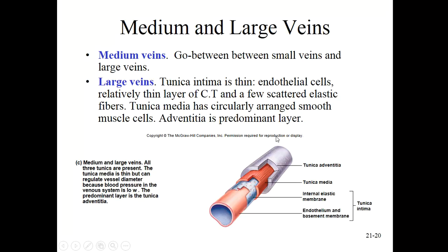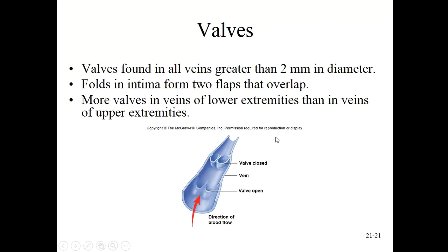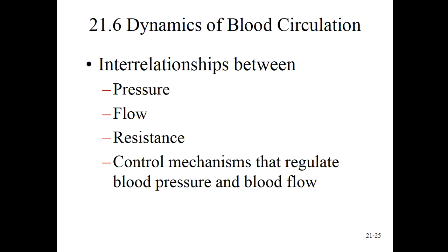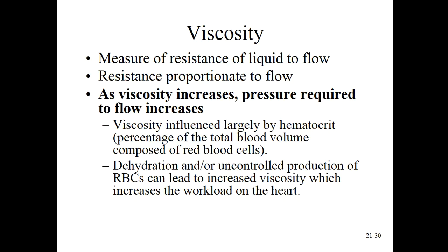There are at least two forces of natural selection at play here: we want significant blood pressure, but we don't want to bleed to death. Structurally, evolution sculpted us so that arteries are better protected and deeper, while veins are closer to the periphery.